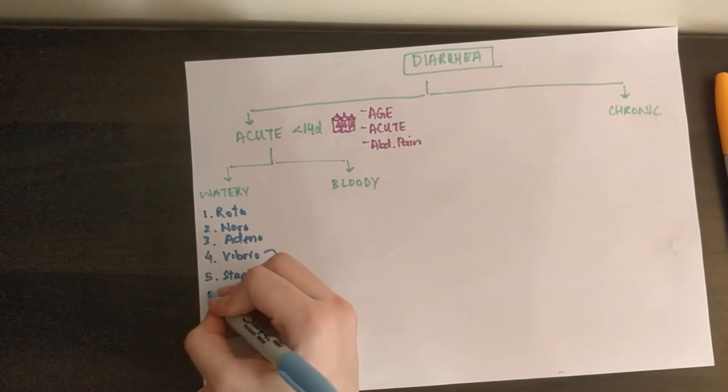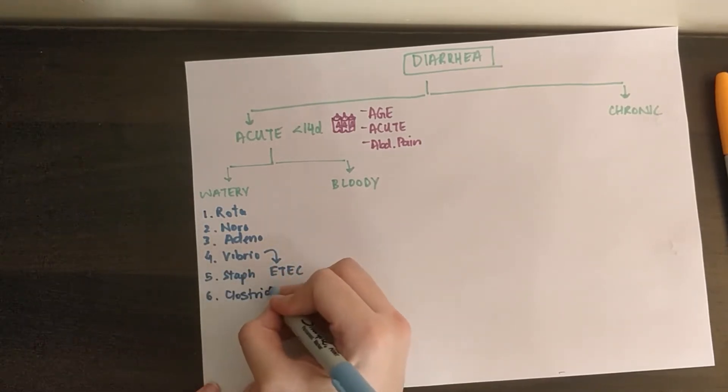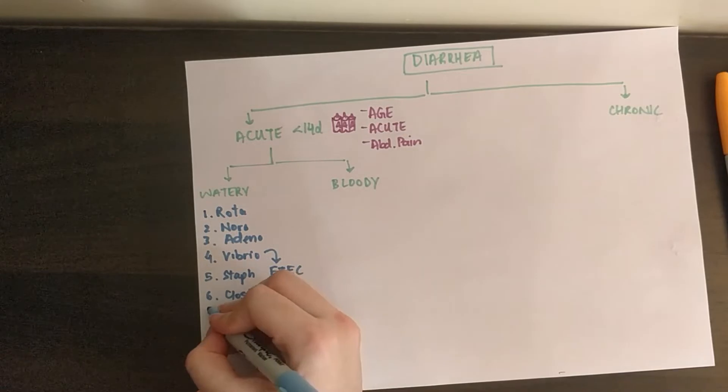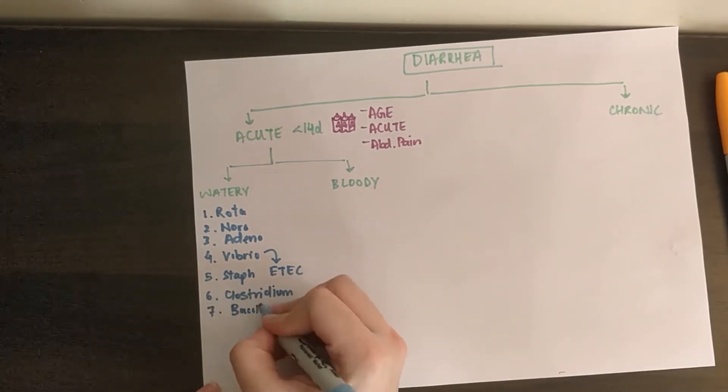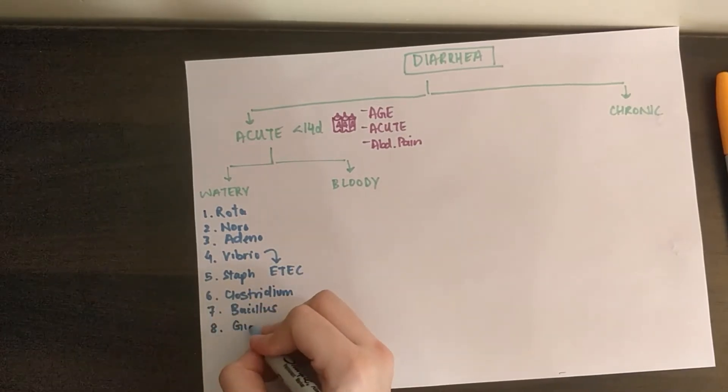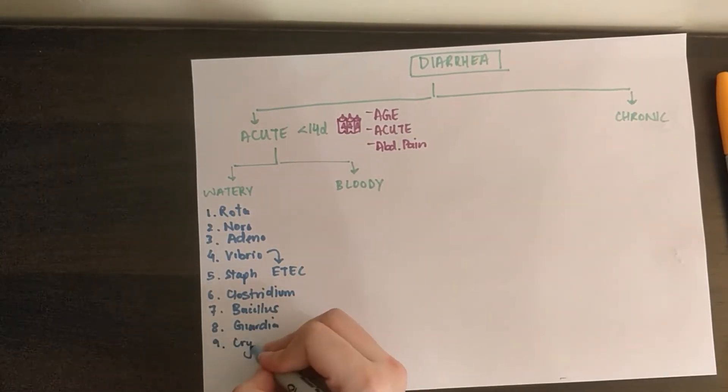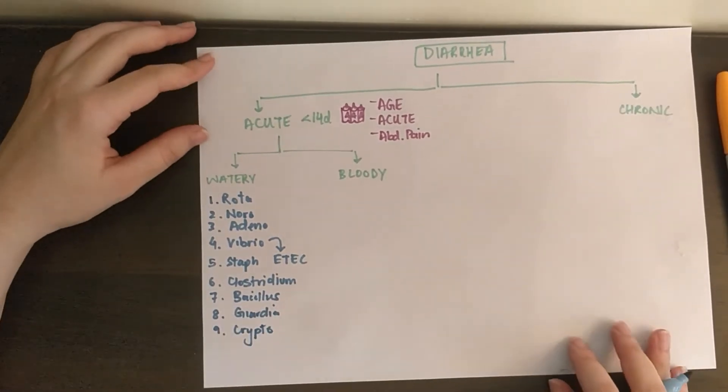Other things causing watery diarrhea are staph food poisoning, Clostridium perfringens, botulinum and difficile, Bacillus cereus, since it's caused by uncooked rice, Giardia after a camping trip, and Crypto, opportunistic with HIV.